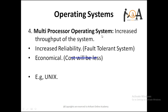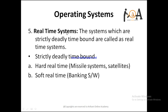Multi-processor operating systems increase the throughput of the system because with several processors, many jobs can be completed in a unit time. They also increase reliability, making the system fault-tolerant, and are economical. Unix is a type of multi-processor operating system.